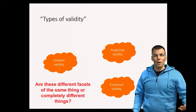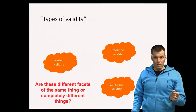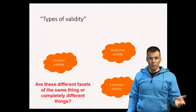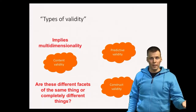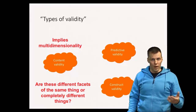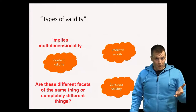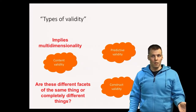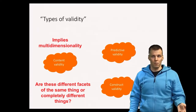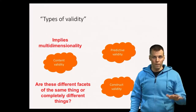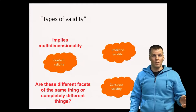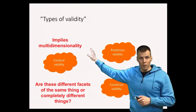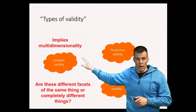Content validity is the idea that your indicators or scale measure all different aspects or dimensions of the phenomenon. A typical example is a math exam. If you do a math exam, it has to cover all the content of the course. For an elementary school math exam, that includes subtractions, multiplications, divisions, and sums. If you only cover subtractions, you lack content validity. So it's whether the indicators cover the domain that the test is supposed to summarize.